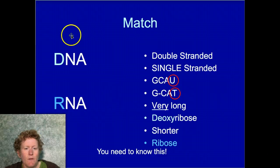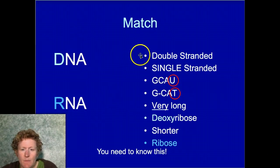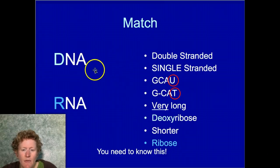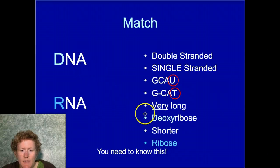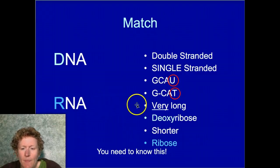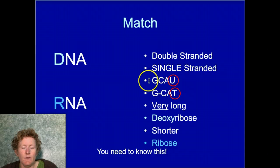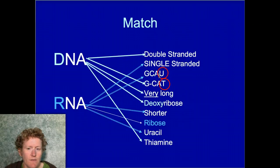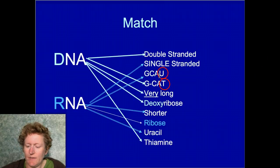To match characteristics of DNA and RNA: DNA is double-stranded, has thymine, is very long, and contains deoxyribose. RNA has ribose, is shorter, has uracil instead of thymine, and is single-stranded. You might want to pause the video and check those differences — it's important that you know them.